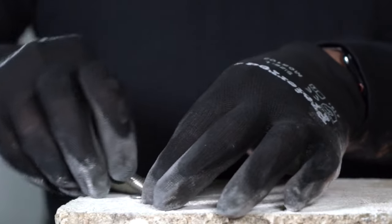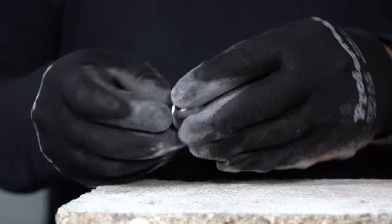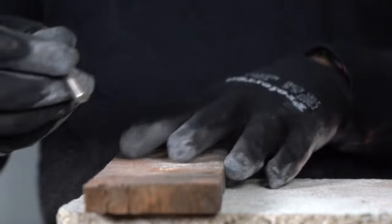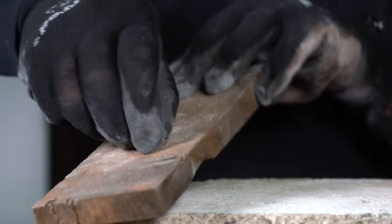So whatever you're fastening to the concrete with a drop-in anchor, it could be this piece of wood. This is just for demonstration.